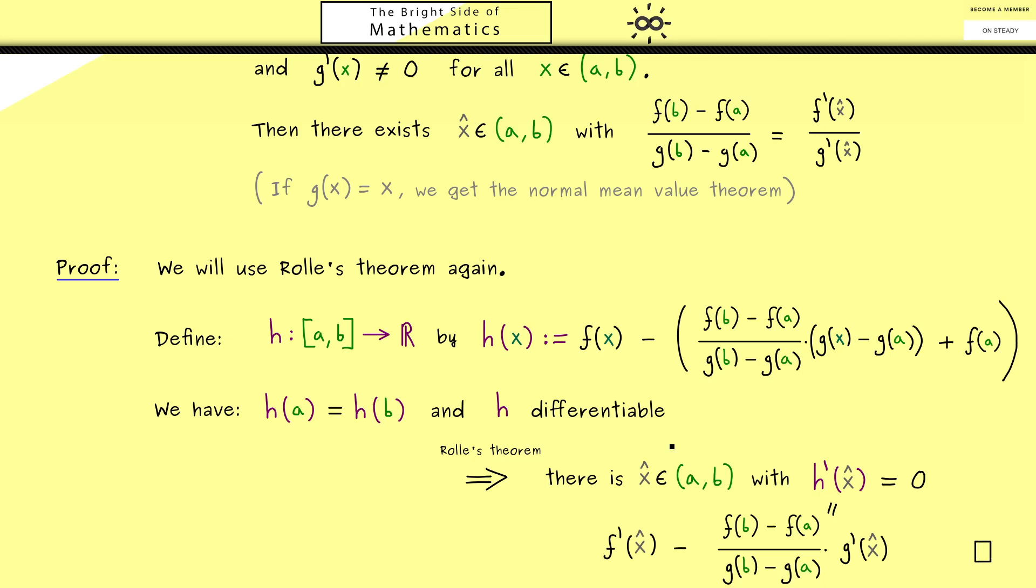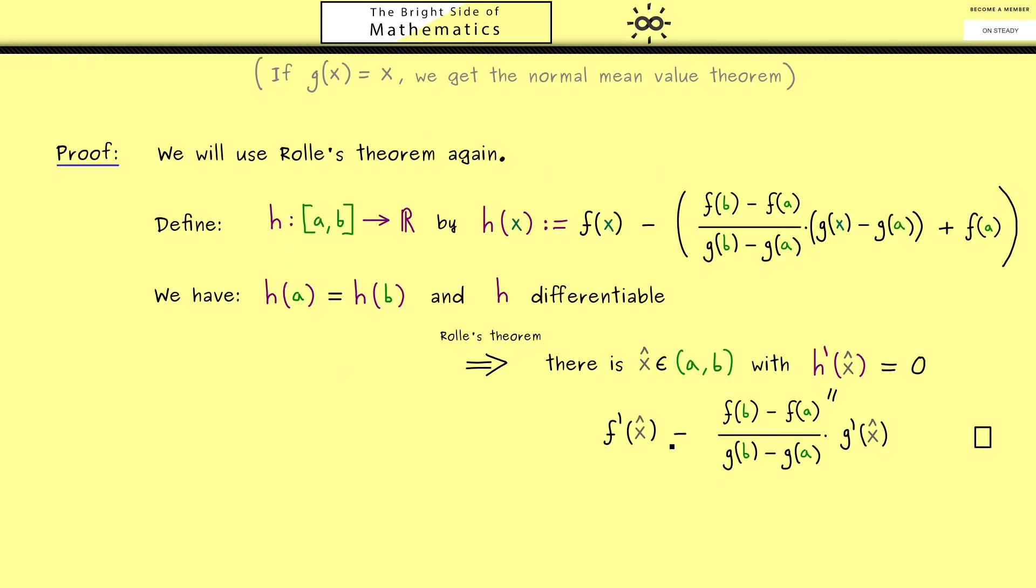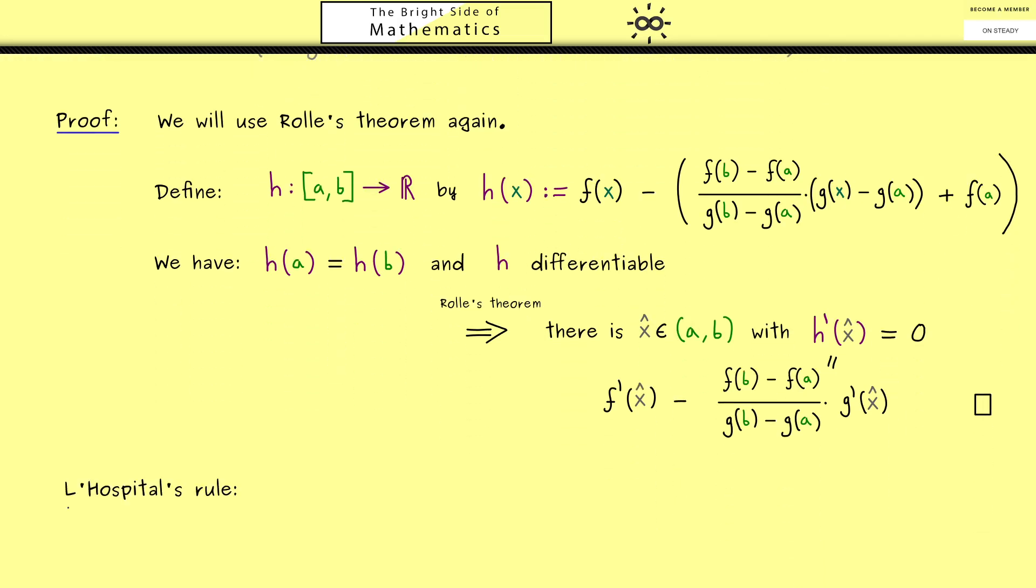Ok now as promised we want to use this result to prove L'Hôpital's rule. In the first step let's formulate the theorem. I already told you we can use it to calculate limits. Therefore we need two functions defined on the same domain I. Moreover it should be an interval and the functions we call f and g.